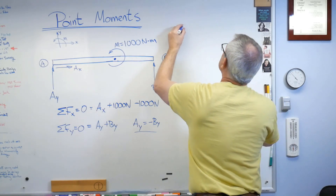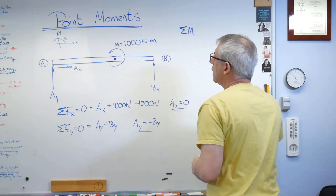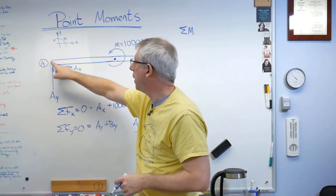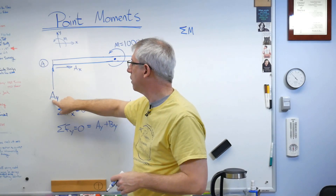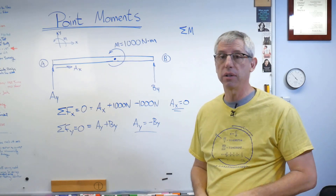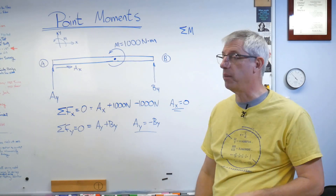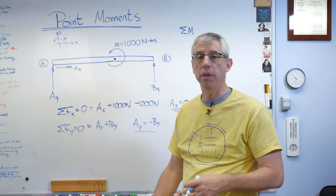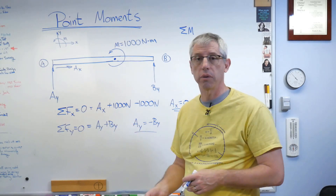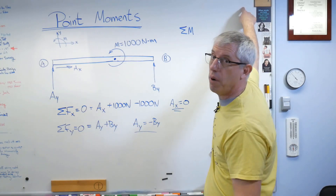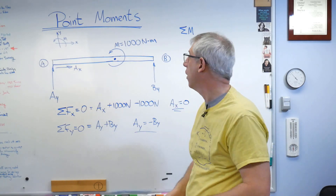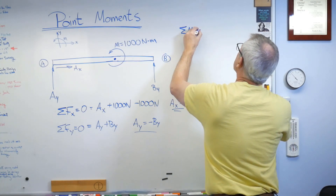Now let's sum the moments. I need to pick a point — let's pick A. If I sum moments about point A, the perpendicular distance of Ay and Ax about that point is zero, so those drop out immediately. Remember, physics doesn't know or care about your coordinate system — that's a human invention to help with bookkeeping. You can sum moments about any point you want. I could sum them way up here if I wanted to, but summing about A is convenient.